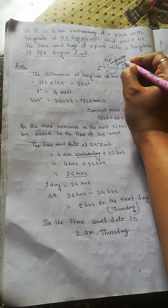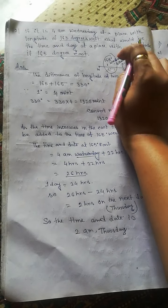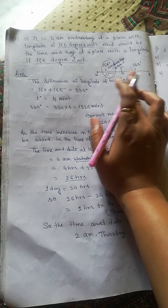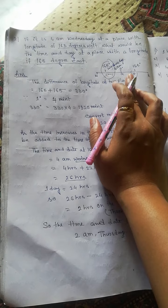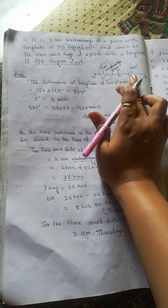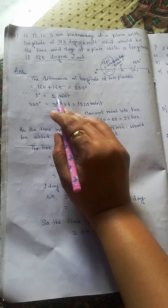So now first you have to calculate the difference of longitude. For calculating the difference of longitude of two places, you have to add 165 and 165 East and West.